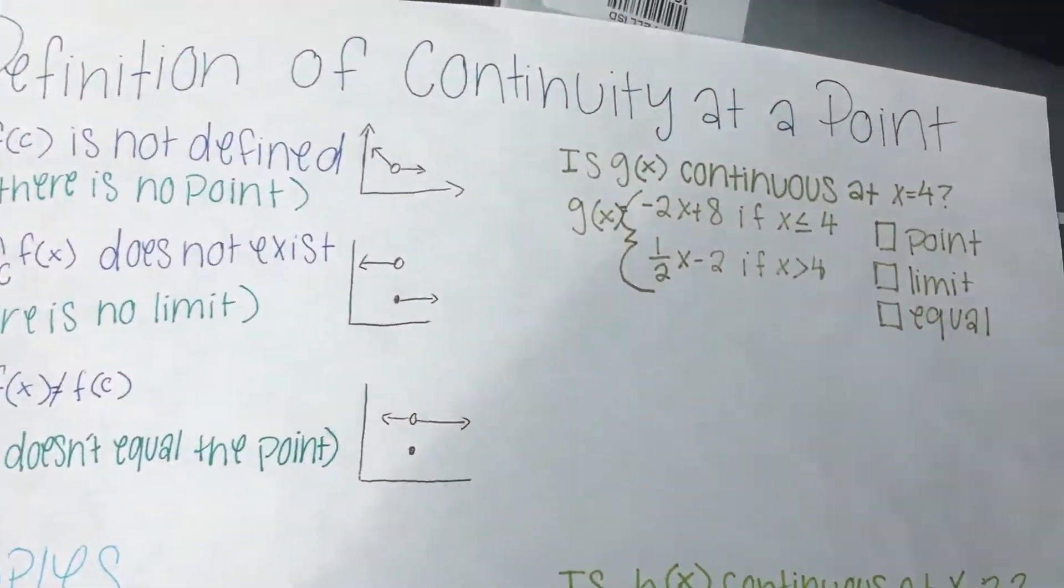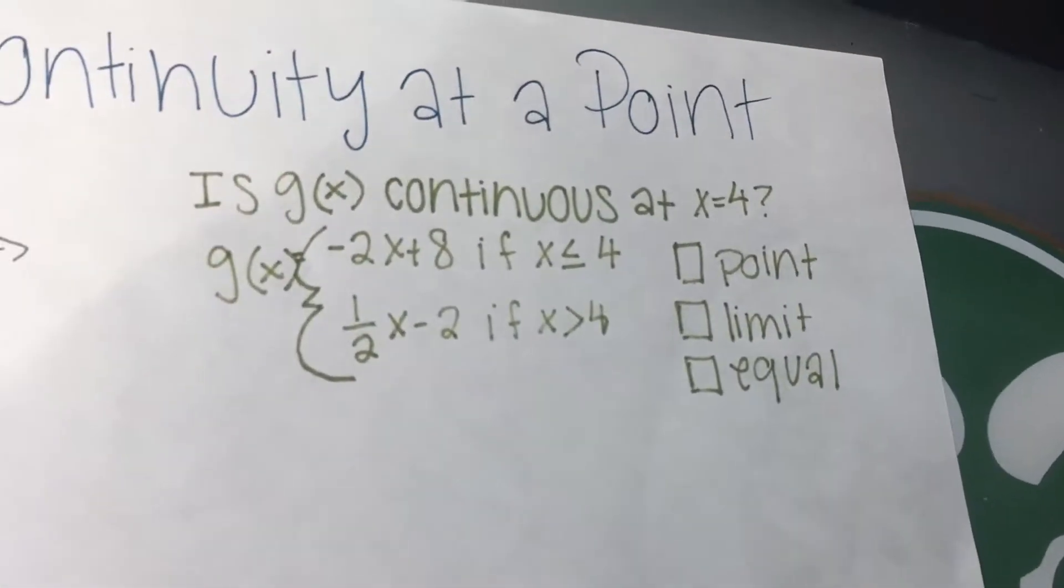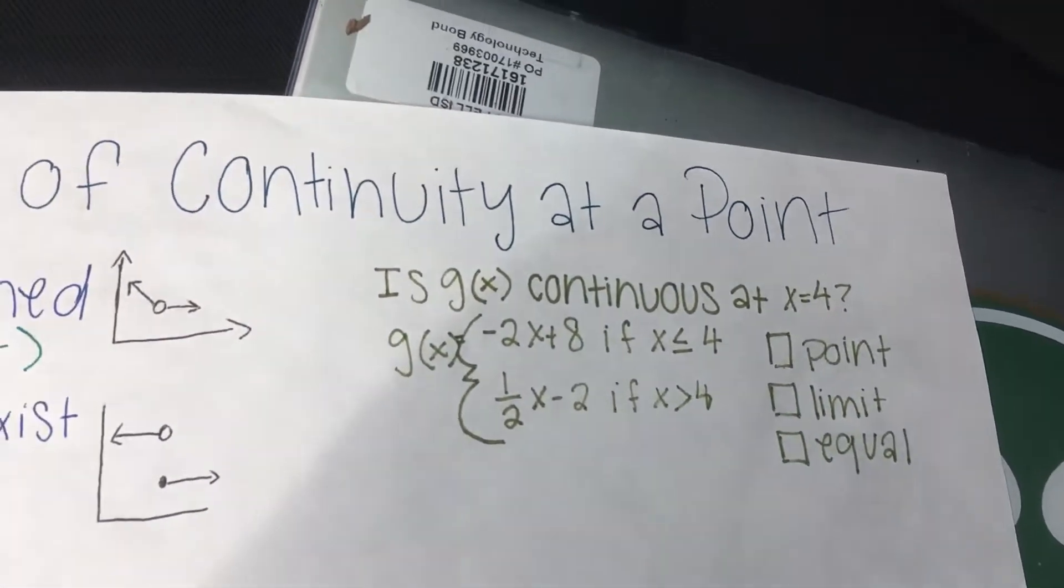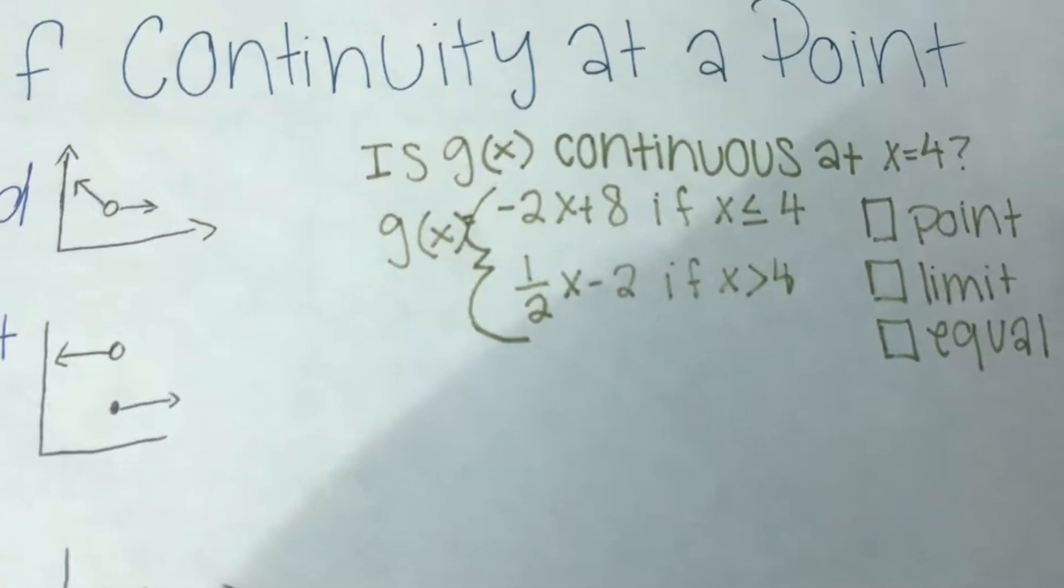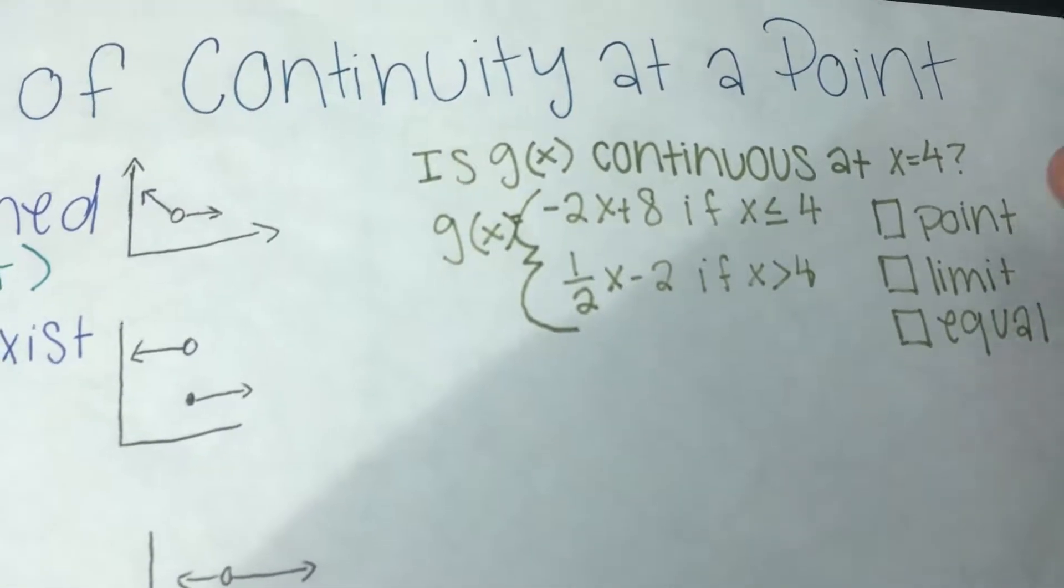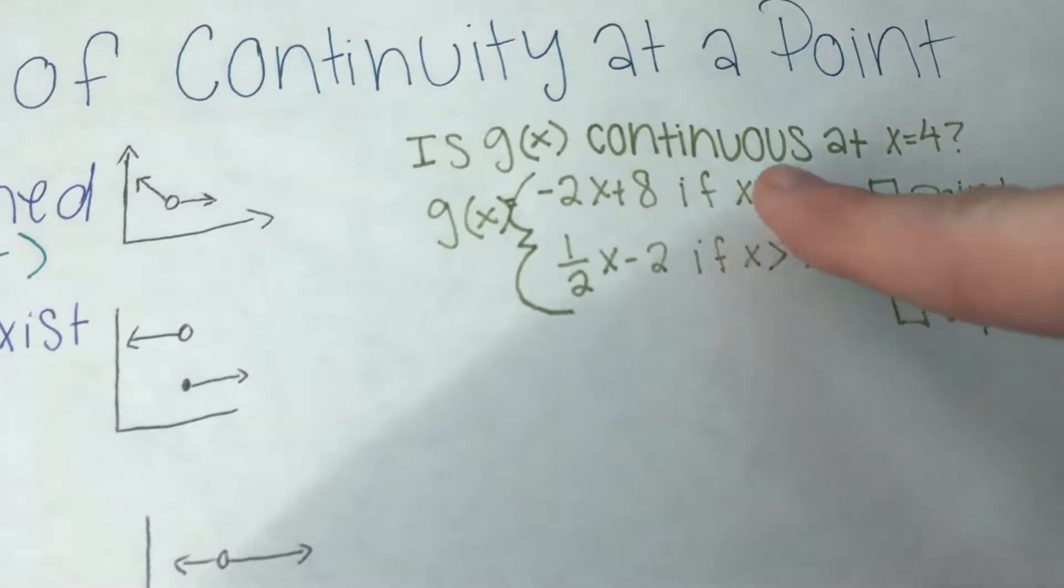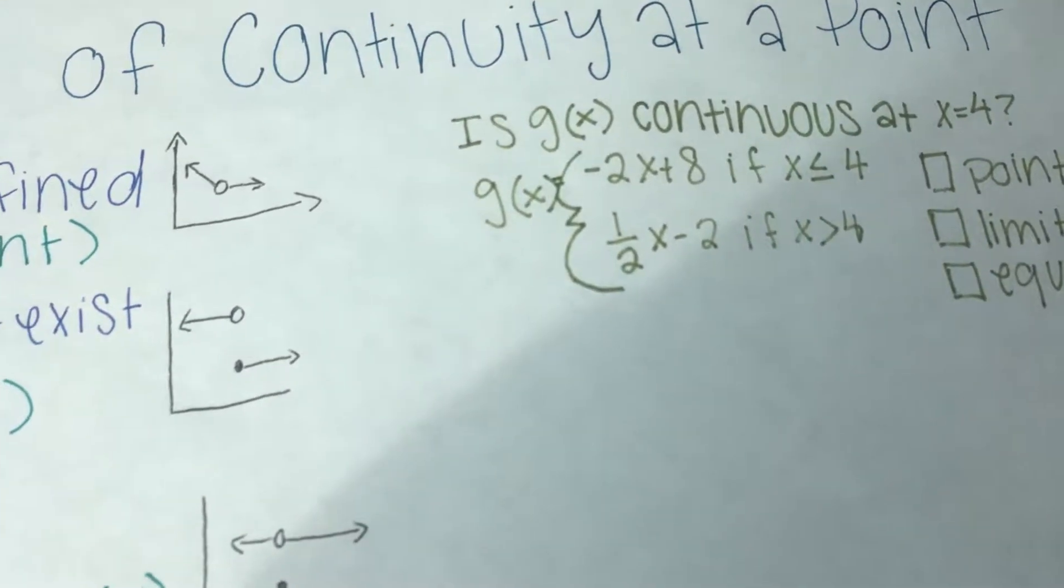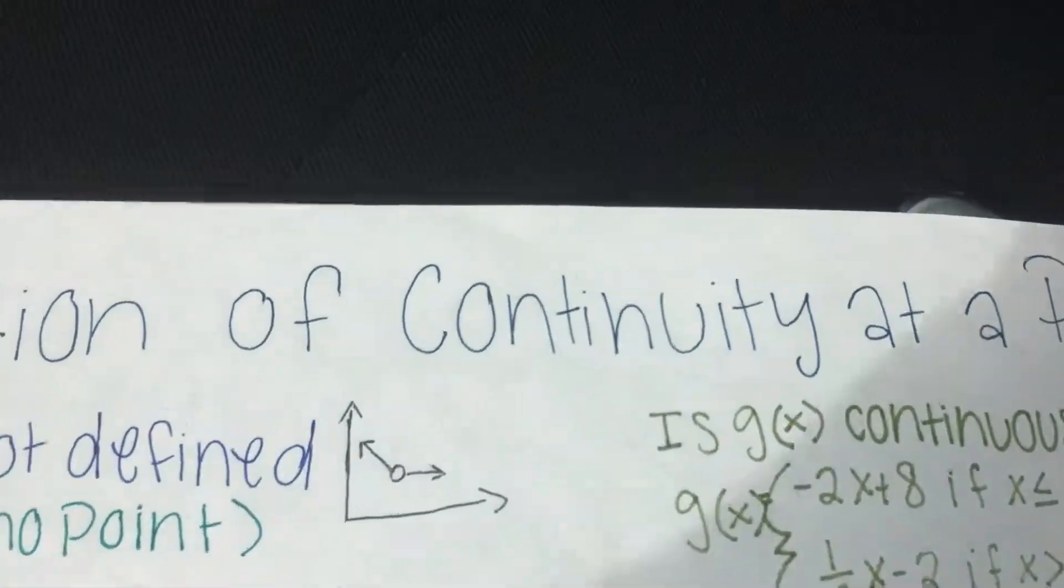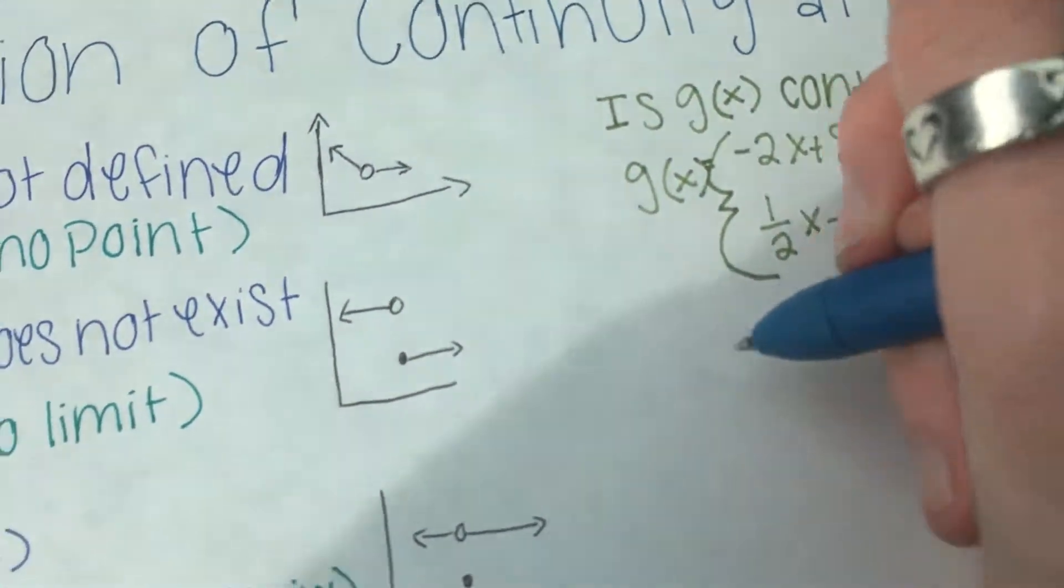So let's look at our next example. We have: is g(x) continuous at x equals 4? So this is a piecewise, so you have to solve for it for the limit from the left and from the right. So we do know from this that there should be a point, but we just have to solve to figure it out.